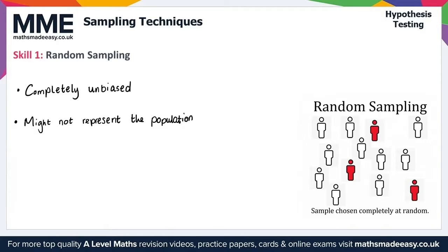On the right, there is a diagram showing an example of random sampling where the sample is chosen completely at random. That gives us everything we need for skill one on random sampling.